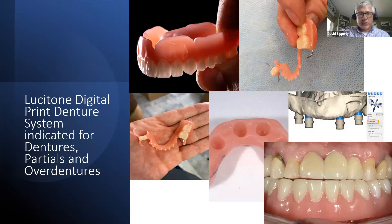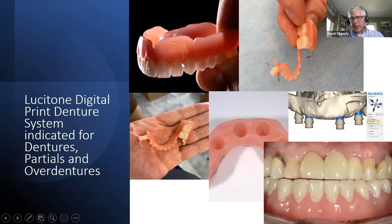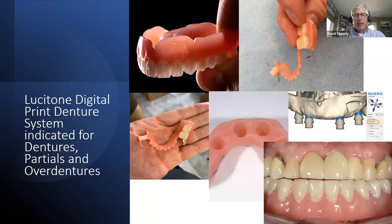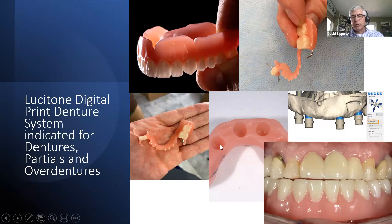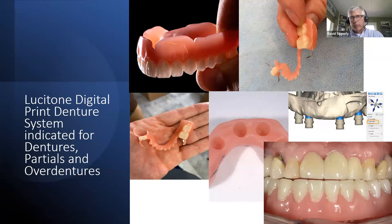Lusitone Digital Print is a perfect system — it's indicated for dentures, partial dentures, and over dentures. In the upper right you can see a printed Lusitone denture, a printed partial with a metal clasp (a traditional acrylic rigid partial, not a flexible one), and in the lower right a Lusitone Digital Print denture with hollowed-out holes for the retentive caps of a conus over denture. Lusitone can do all aspects of your removable workflow.